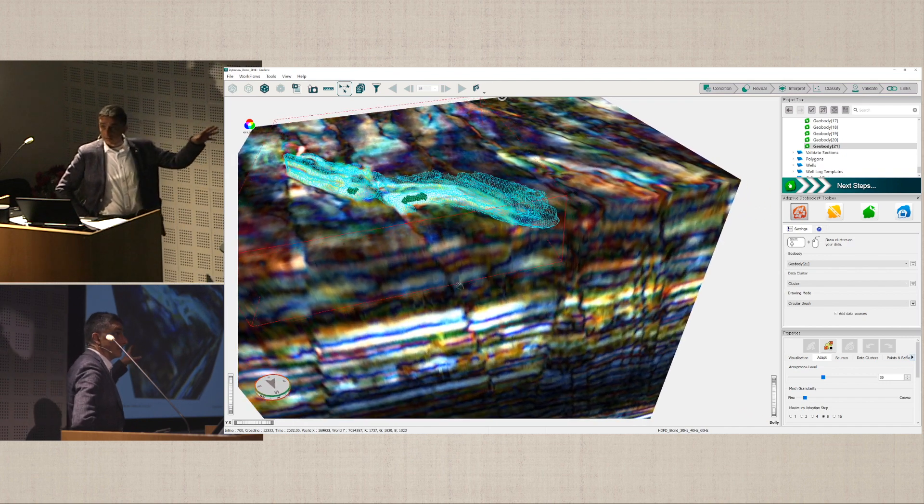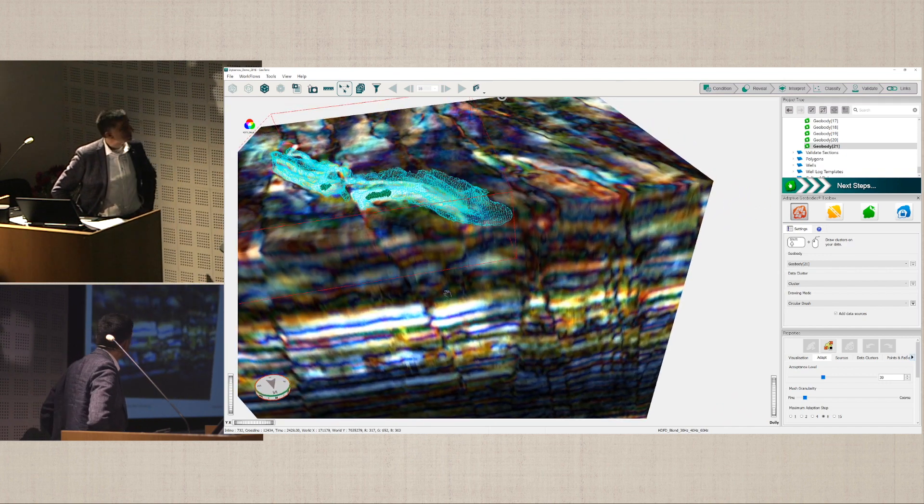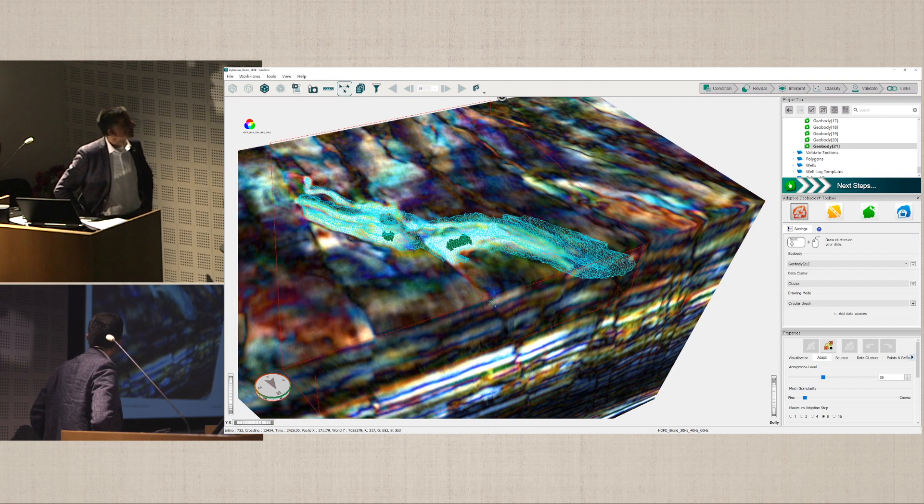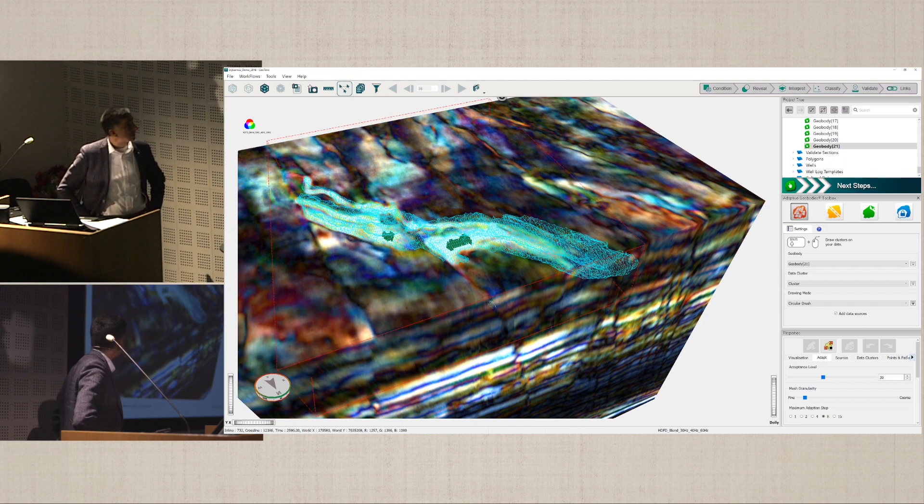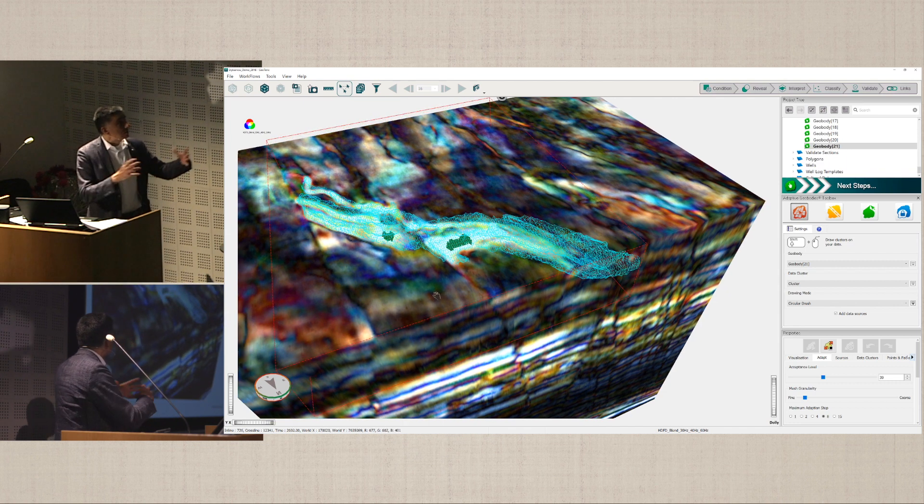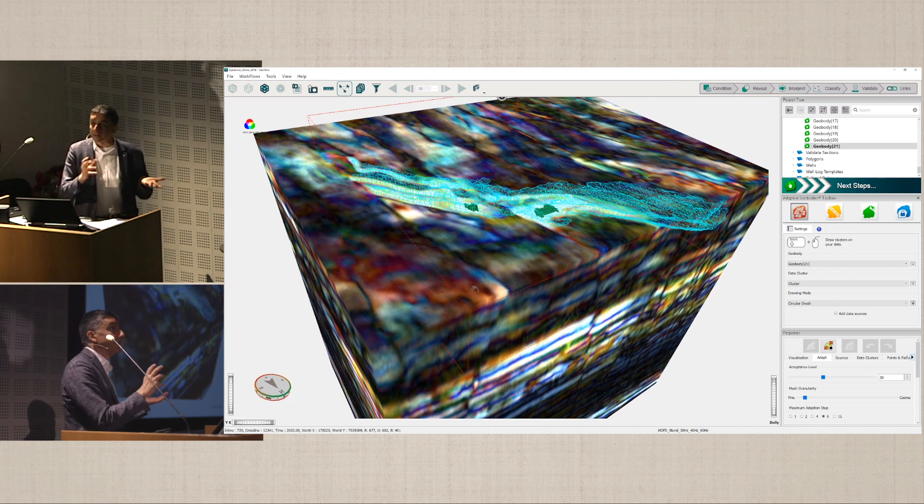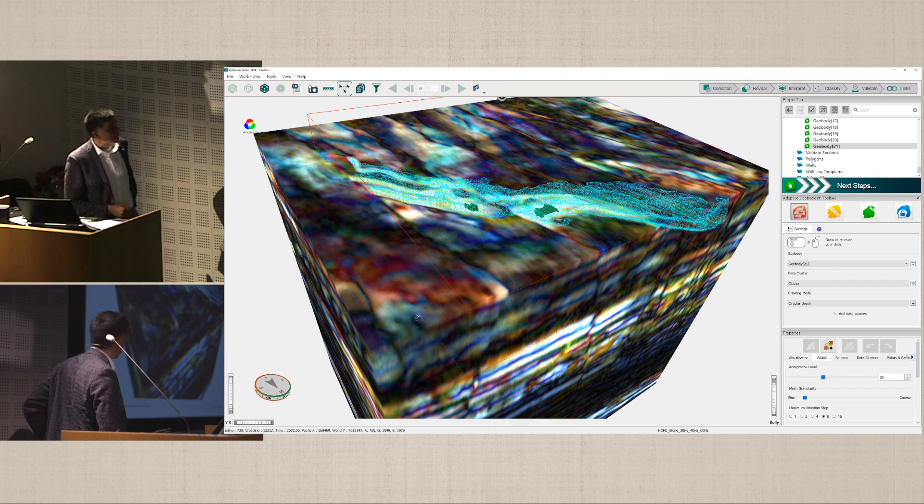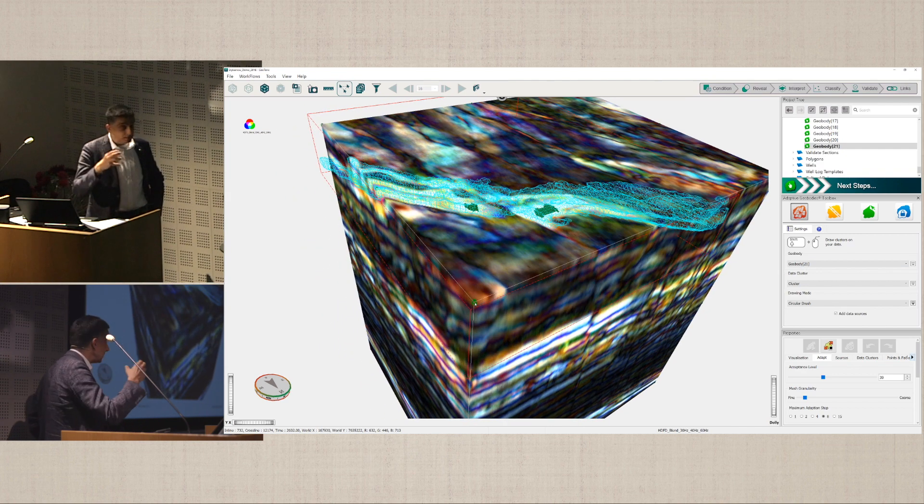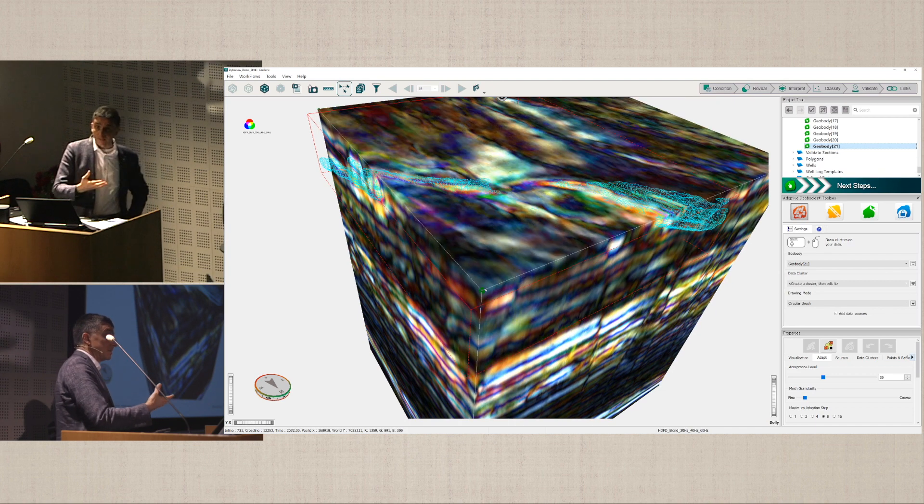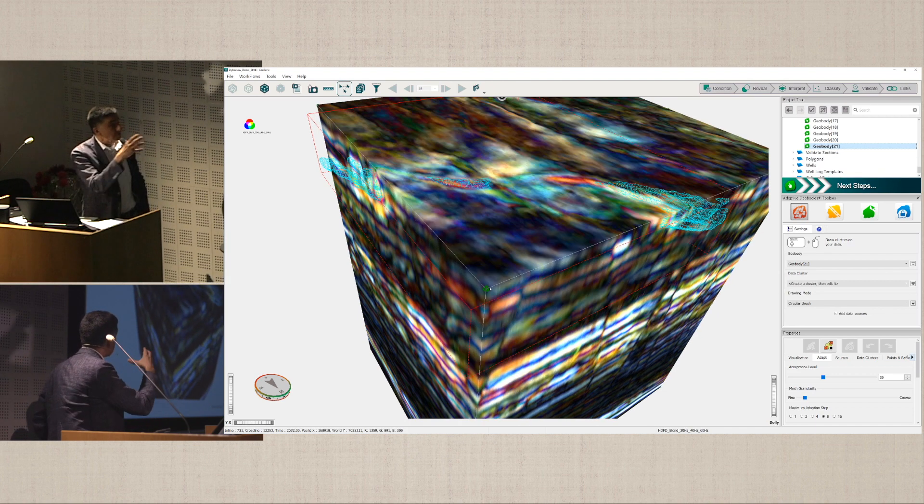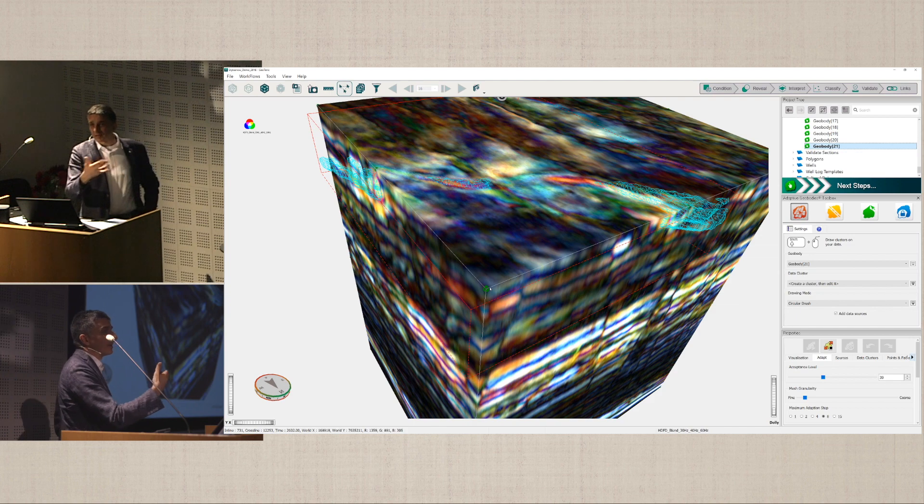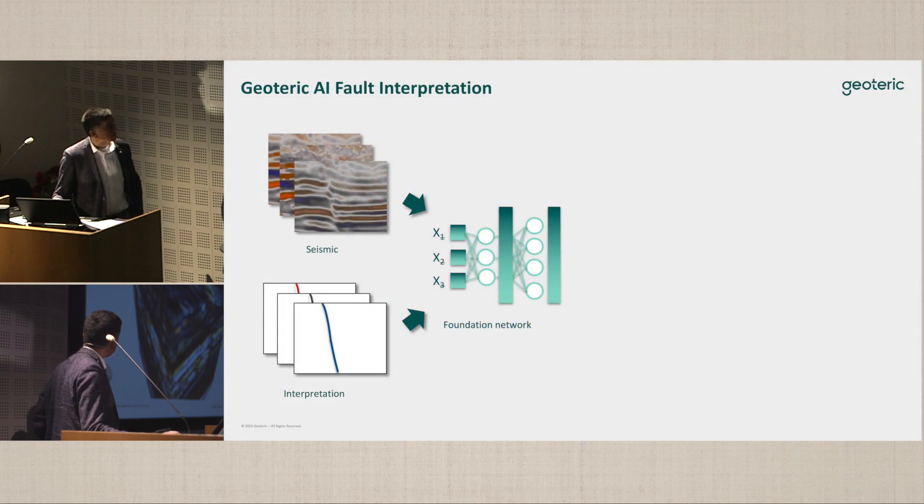The algorithm will run around and find those points which are similar to those that have been highlighted by the user. So with that, we can extract geobodies using color blends or multi-cubes of attributes.